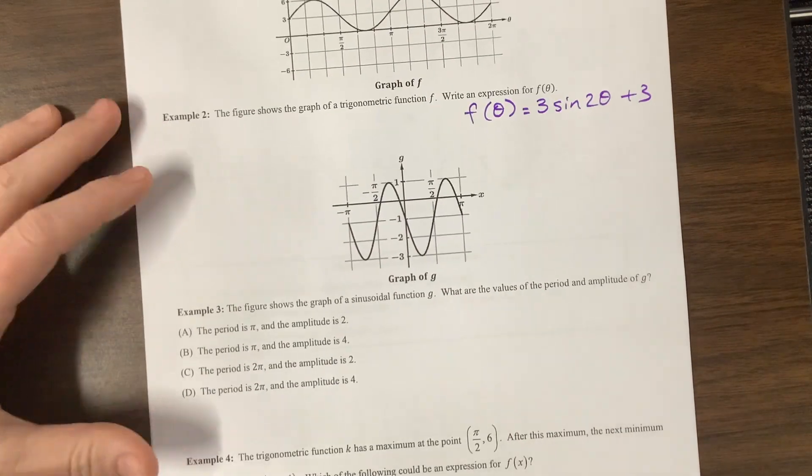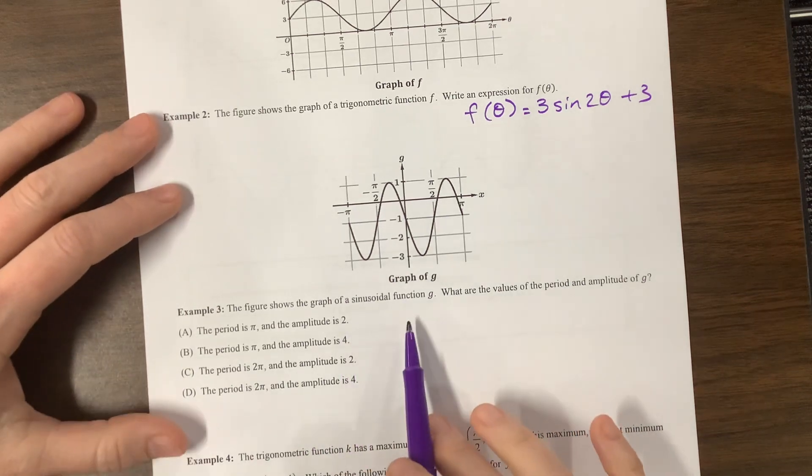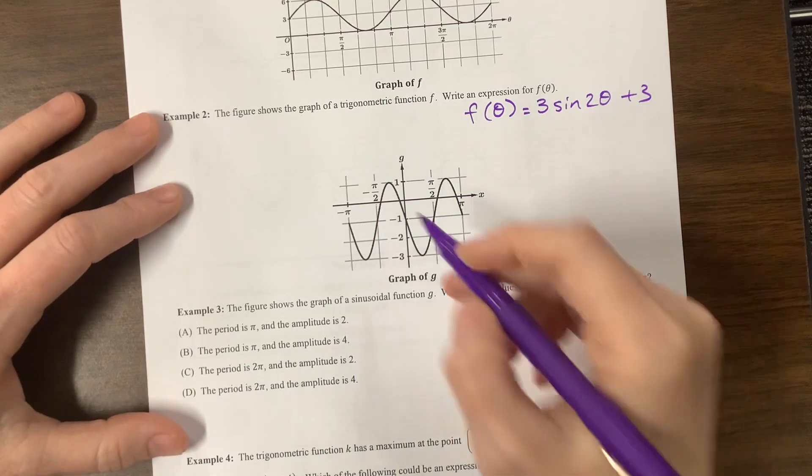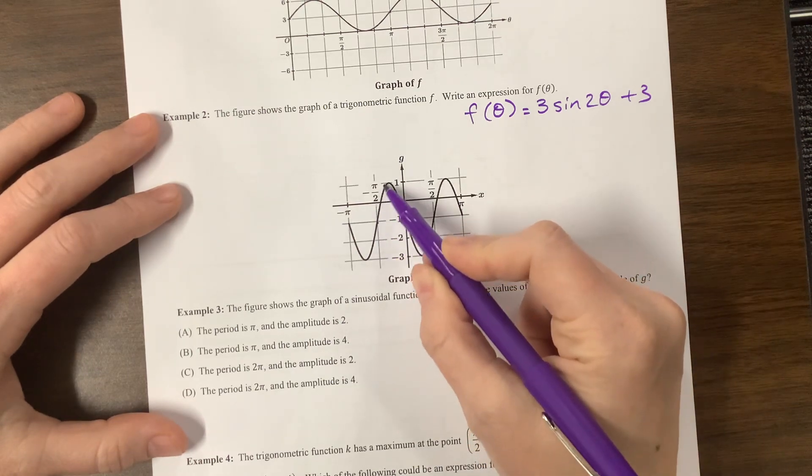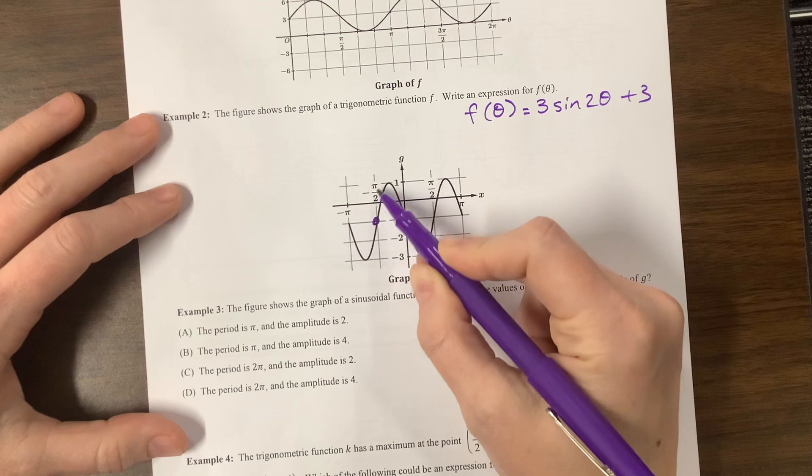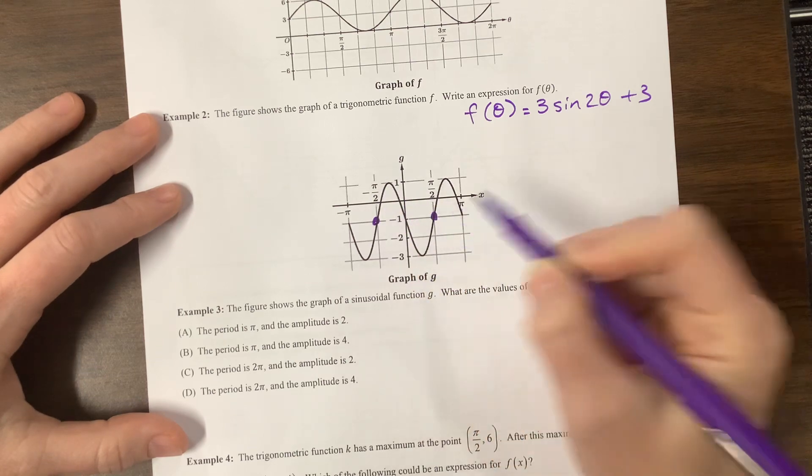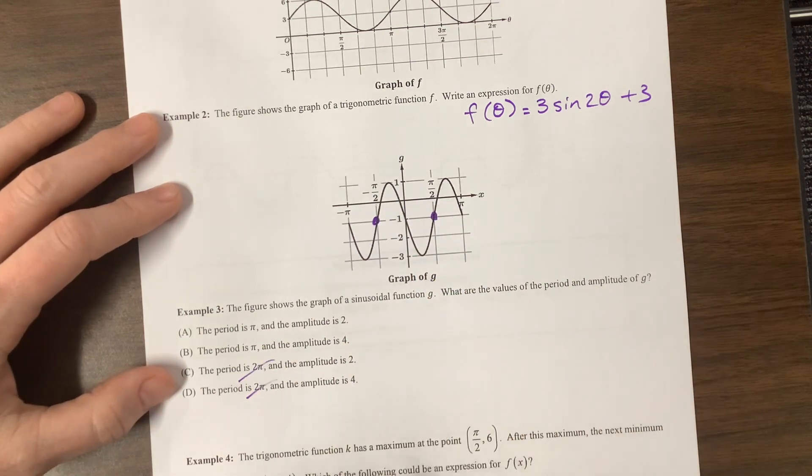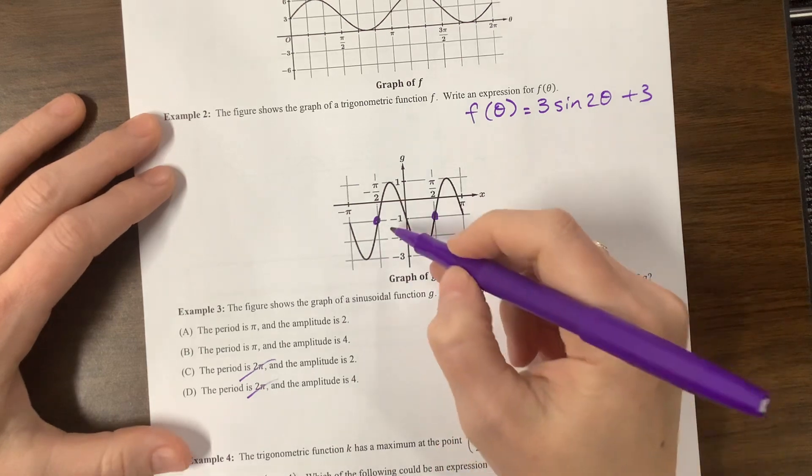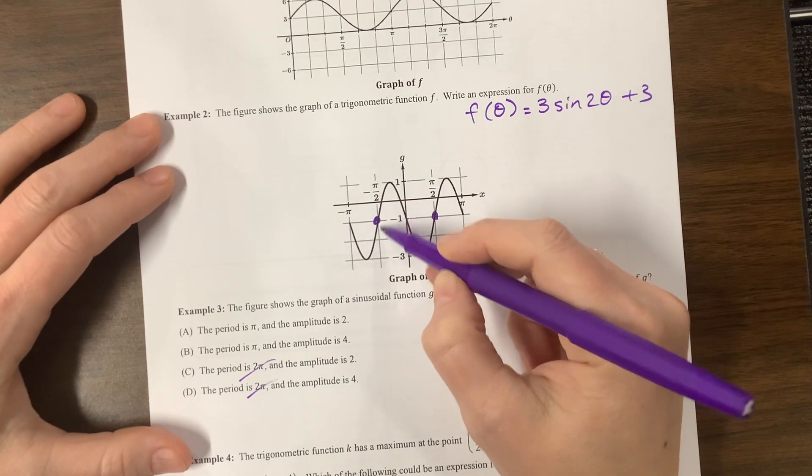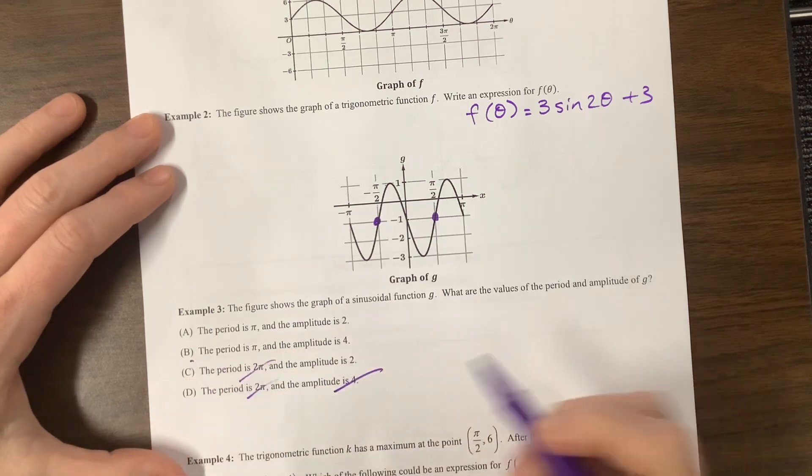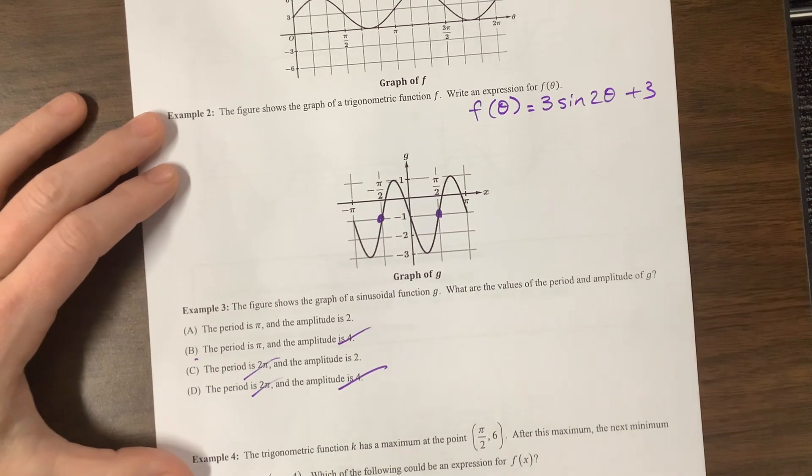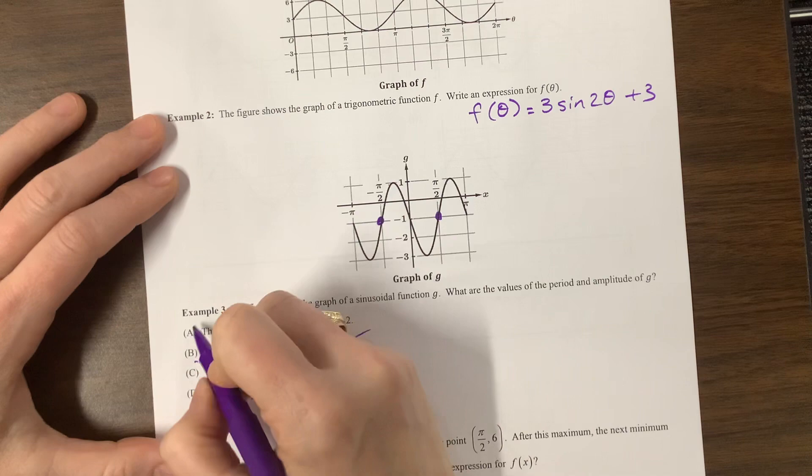The figure shows the graph of a sinusoidal function g. What are the values for the period and the amplitude? So I'm looking at, it starts here at negative π over 2. If I start here, that's a midline, and it comes back at π over 2. So the period is π, so those are wrong. And it says the amplitude is 4 from negative 1 to negative 3 is 2. The amplitude is not 4, so no. That is the one I should have crossed off. And so the correct answer is A.